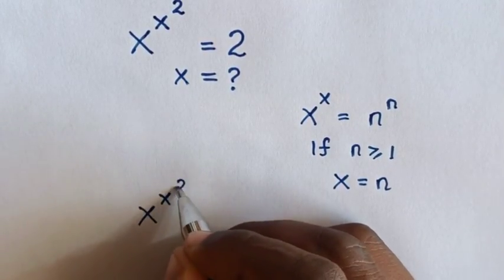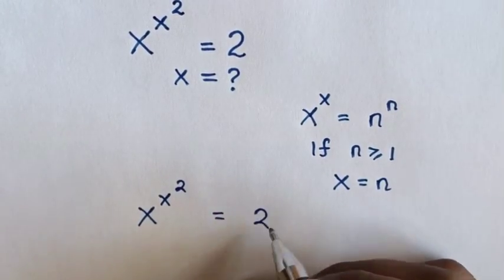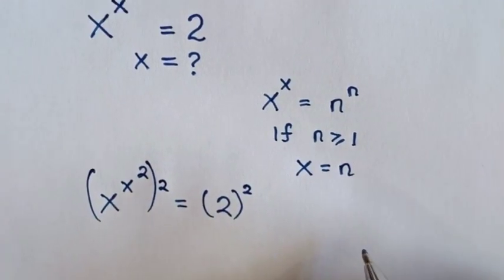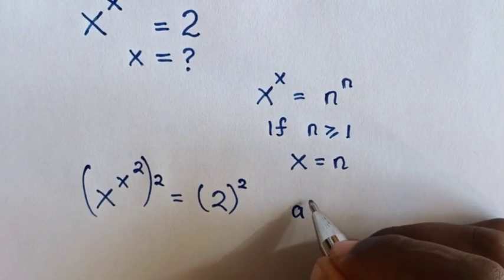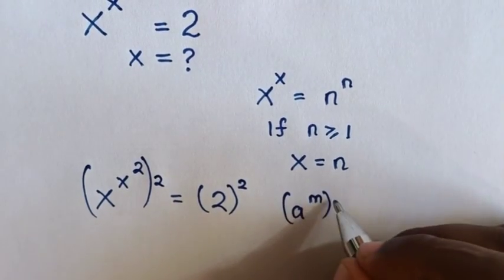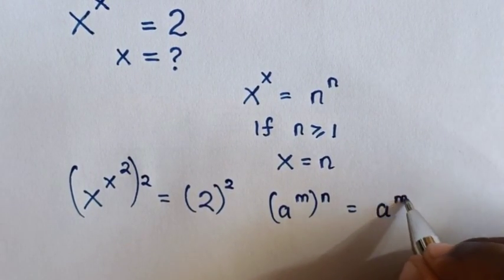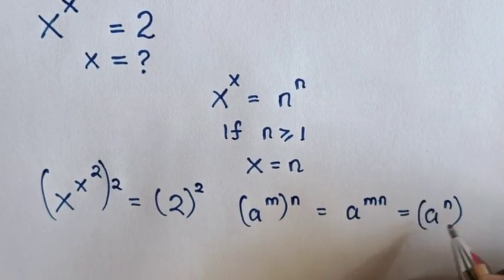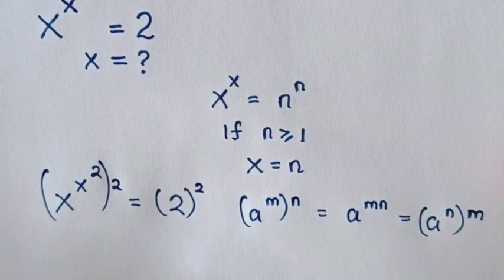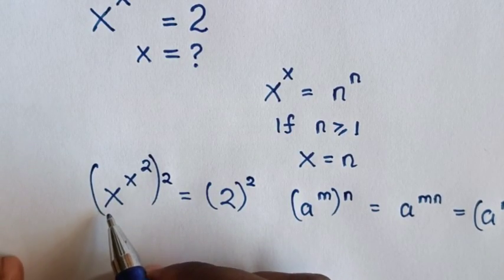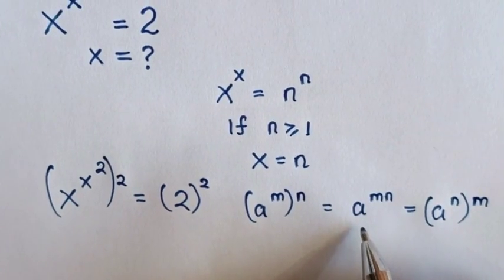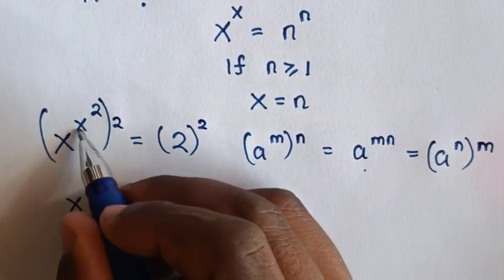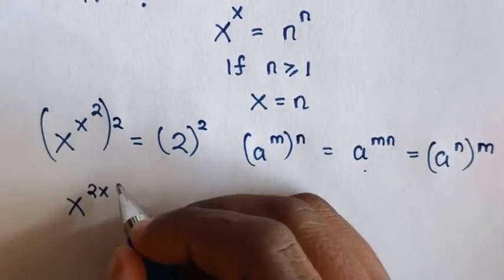From our equation, which is x power x power 2 is equal to 2, we multiply by power of 2 on both sides. From here, we will apply this rule: a power m, bracket power n, is equal to a power m·n, which is equal to a power n bracket power m. So in our equation, we multiply the powers, like in the rule. So here it will be x power of x times 2, which is power of 2x, power of 2.